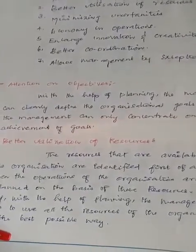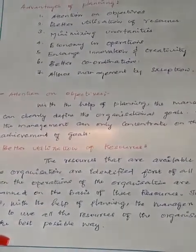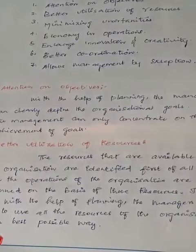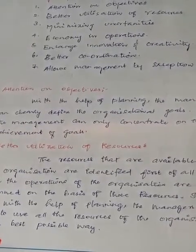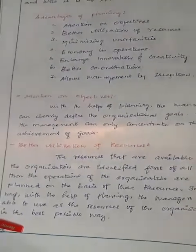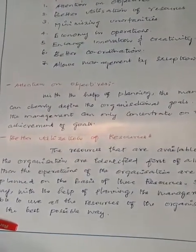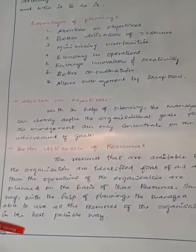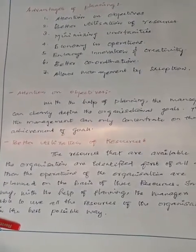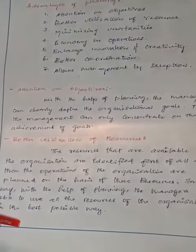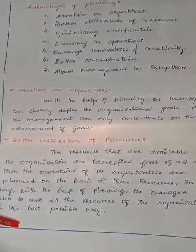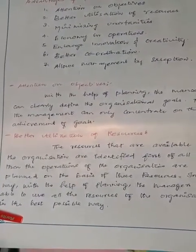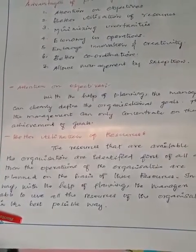The next point is better utilization of resources. If we need to use resources, we need to avoid wastage. For example, if we need to do resources, we need to use 1,000 units.